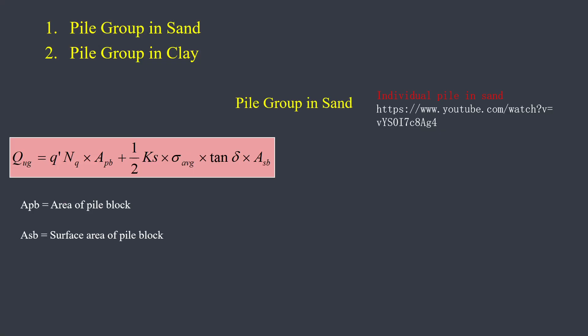Anyways, let's go ahead — I assume you have already seen it. We will not go into the theory of how the equation is derived; I will directly give you the equation and we will take one numerical to explain each and every part. The equation for capacity of pile in a group in sand is: Q' × Nq × APB + ½ × Ks × σ_average × tan δ × ASB.